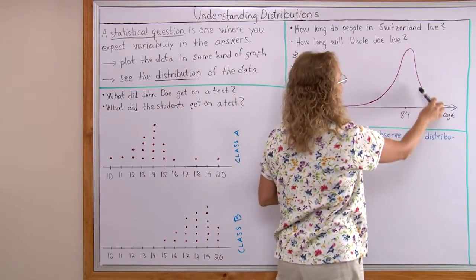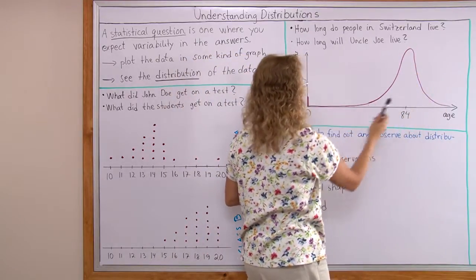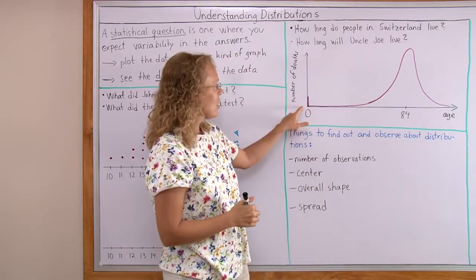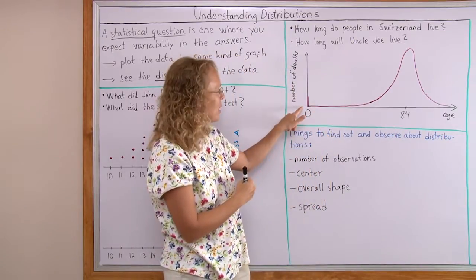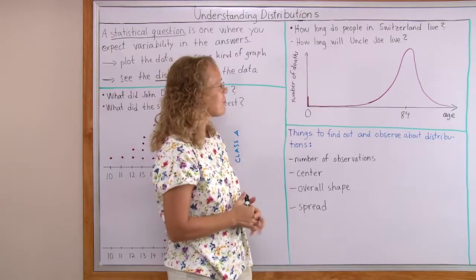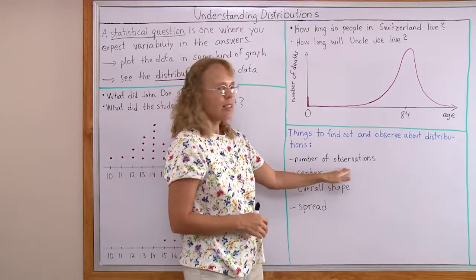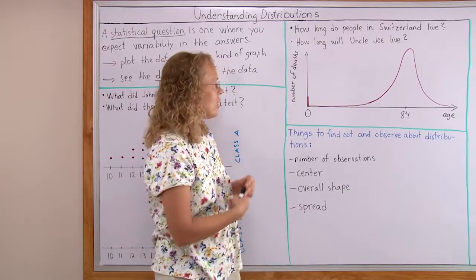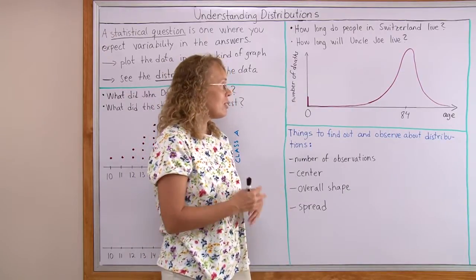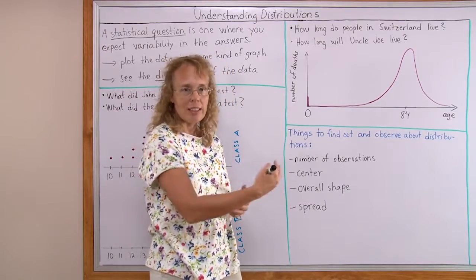So this is an interesting shape because it has two peaks. There's most of the people dying around these ages but then there's also a significant peak here at zero.